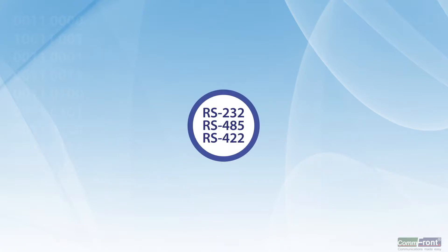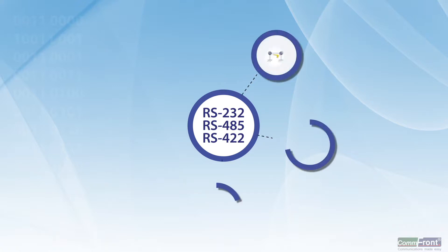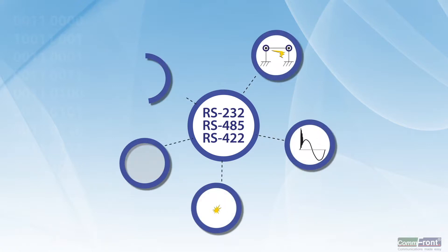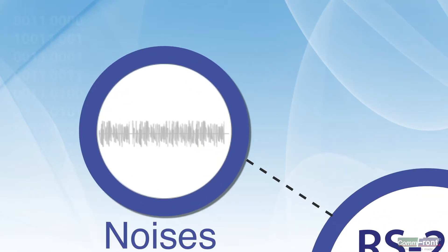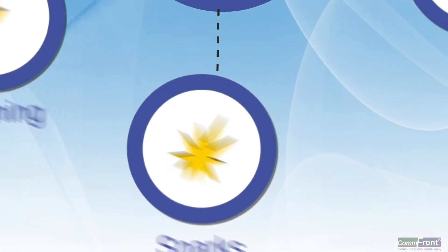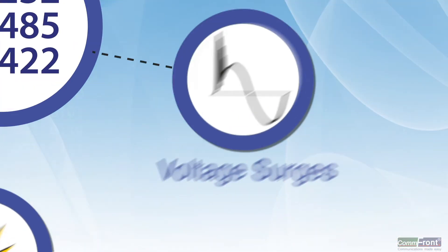First, because of the long distances and the surrounding electrical devices, RS-485 and RS-422 networks are often exposed to electrical noise, remote lightning, sparks, and voltage surges.